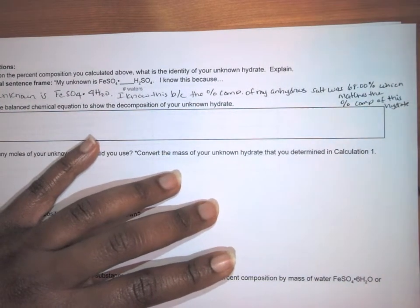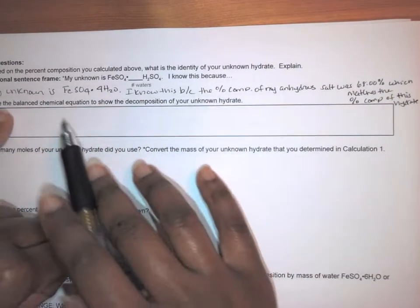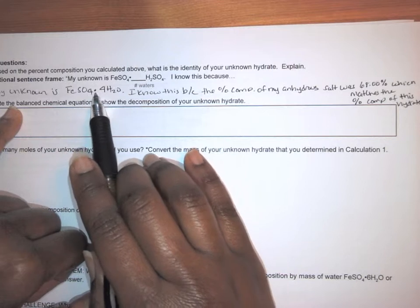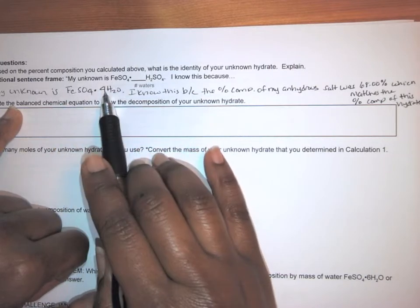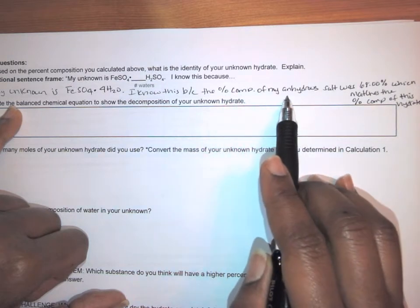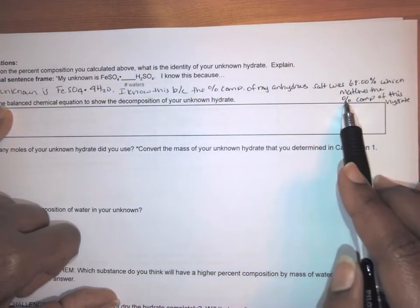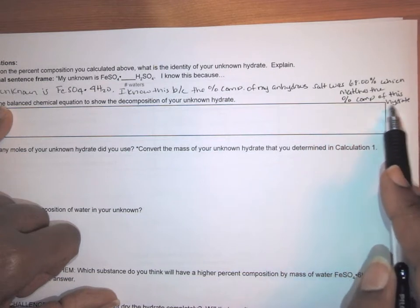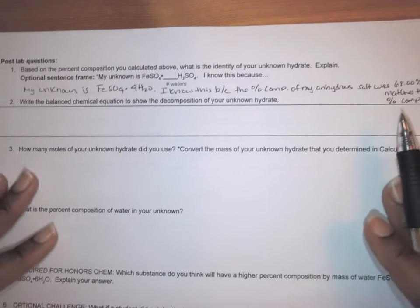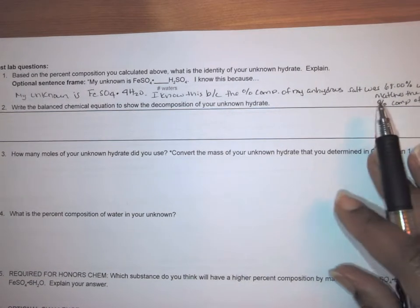So key thing here. What I said it was my unknown is FeSO4·4H2O. And I know this because the percent composition of my anhydrous salt was 68%, which matches the percent composition of this hydrate. And so the key here is that you're showing me that you know how you found out what your unknown is. So that's question one.